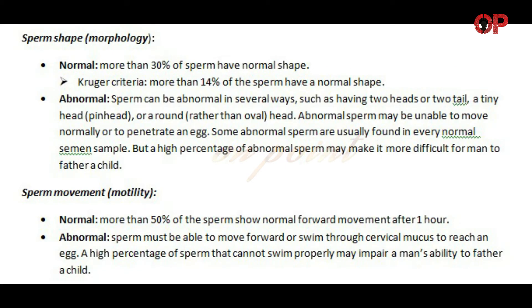Sperm shape or morphology — Normal: More than 30% of sperm have normal shape. Kruger criteria: More than 14% of the sperm have a normal shape. Abnormal: Sperm can be abnormal in several ways, such as having two heads or two tails, a tiny head or pinhead, or a round rather than oval head. Abnormal sperm may be unable to move normally or to penetrate an egg. Some abnormal sperm are usually found in every normal semen sample, but a high percentage of abnormal sperm may make it more difficult for a man to father a child.